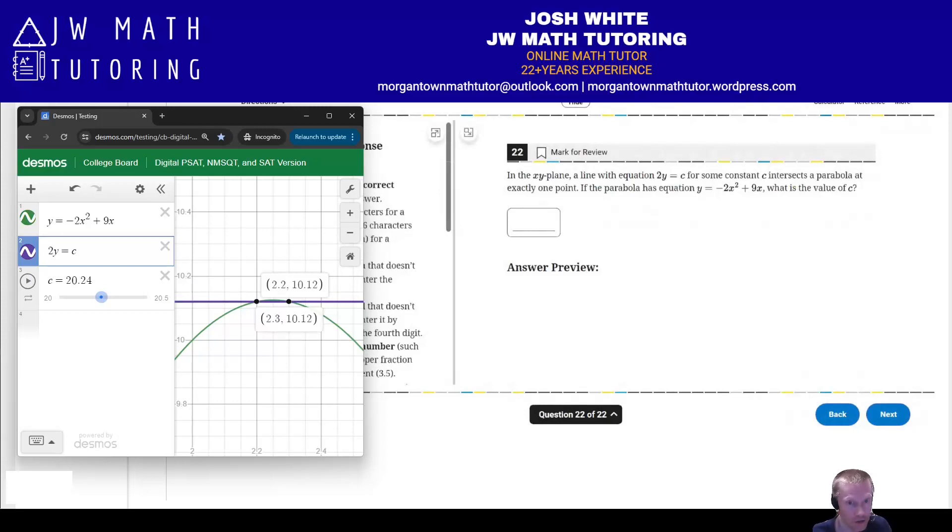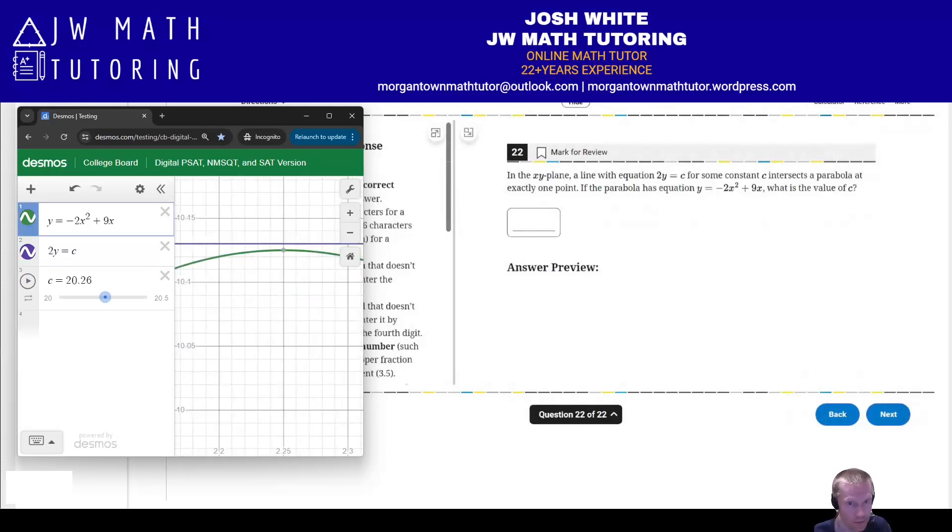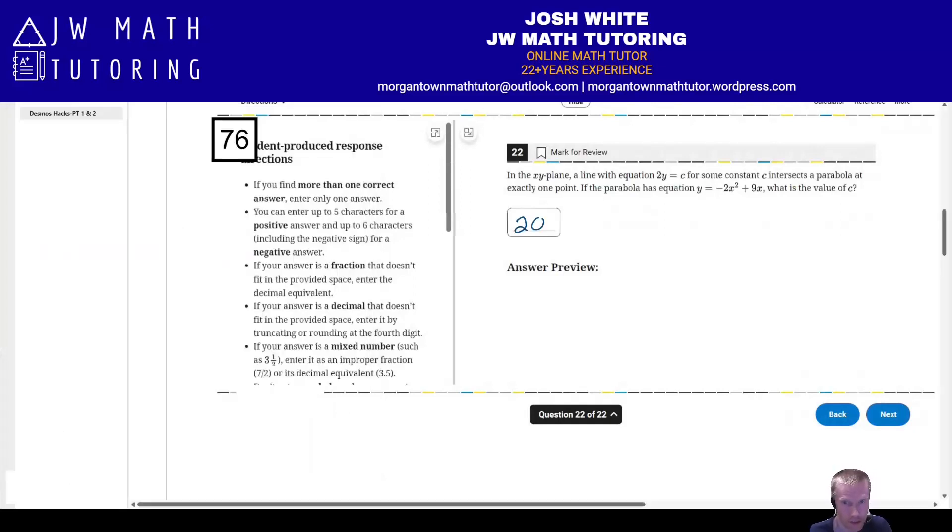If we zoom in, it looks like, yes, right here we have exactly one point of intersection. Notice if I go just basically one hundredth below, now when I click on it, there's two dots, i.e. they intersect twice. It's too low. Or if I go one thing above, notice there's no intersection. If you zoom in, you can see that there's white between it still. Here's the vertex, but here's the horizontal line above it. So that means the correct answer is just 20.25. That's your value of C. You could also technically grid this in in its fraction form, 81 divided by 4.